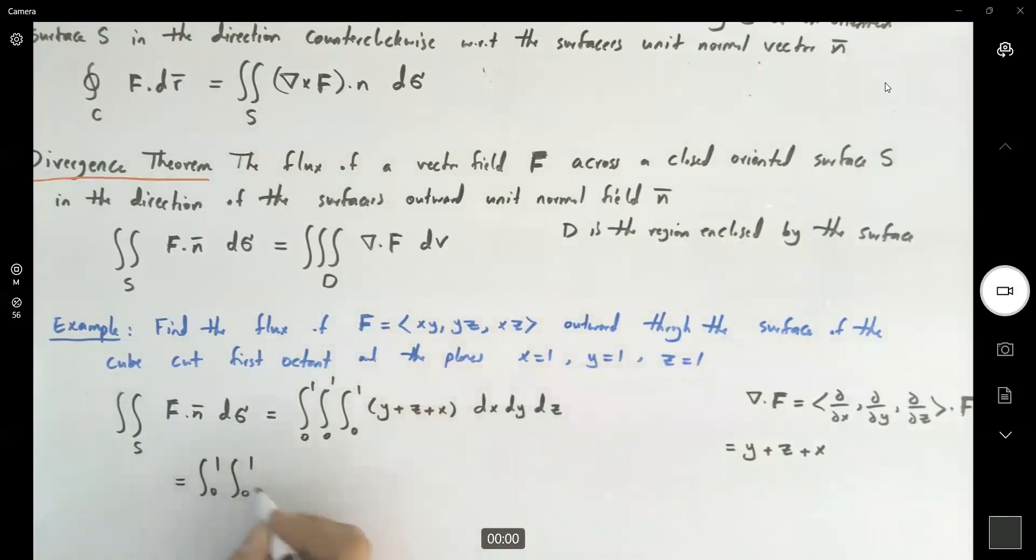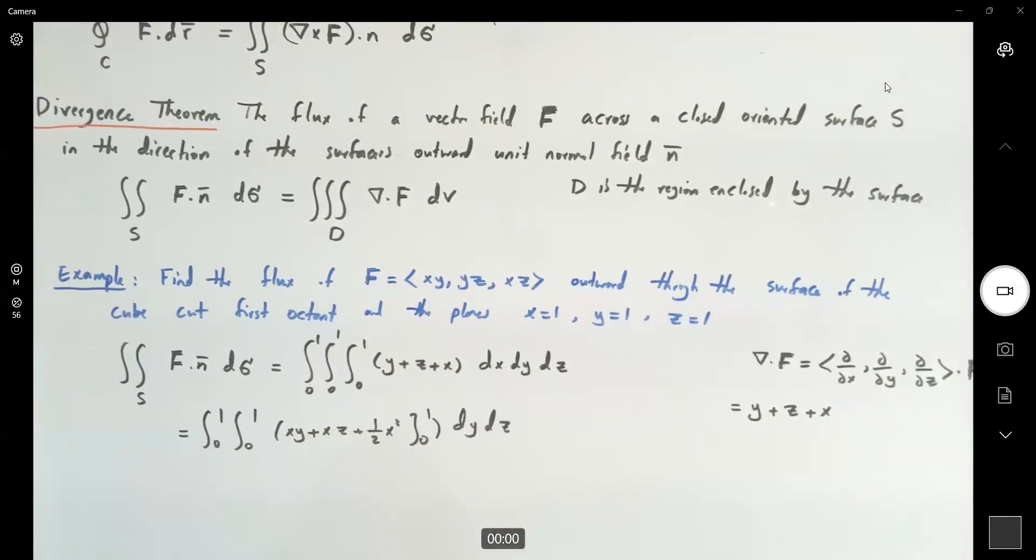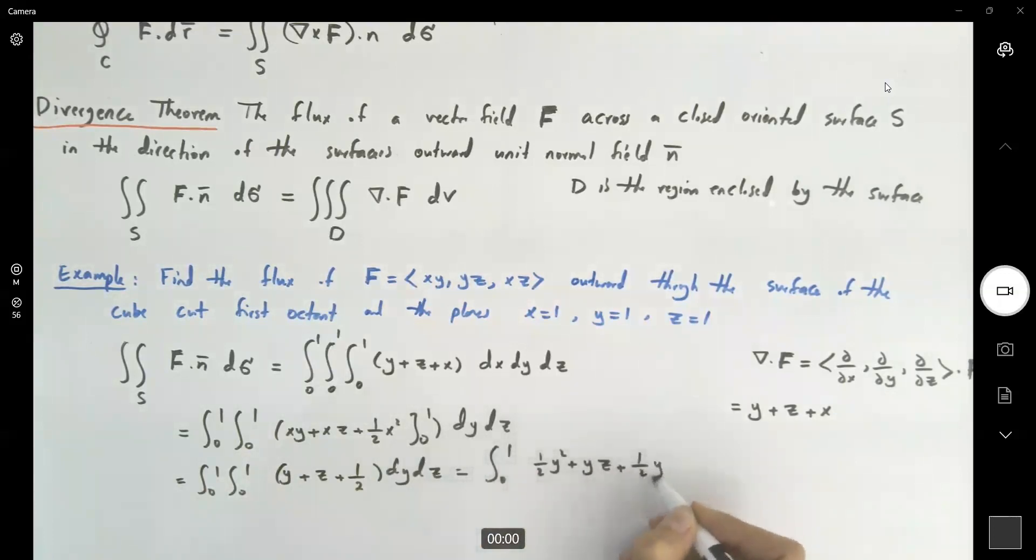So here we have 0 to 1, 0 to 1, xy plus xz plus a half x squared, 0 to 1, then taking the integral with respect to y and z. If you just want to follow the triple integral, 0 to 1, 0 to 1, you get y plus z plus a half. Divide dz becomes 0 to 1, a half y squared plus yz plus a half y, 0 to 1, then dz.